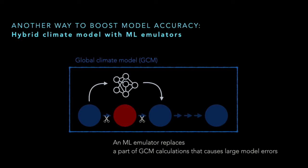So we need to take a different approach. An alternative which is computationally feasible is a hybrid climate model with machine learning emulators. In a hybrid model, a machine learning emulator replaces a specific part of the GCM — global climate model — calculations from which we know large errors originated. Then the question becomes: what process, what calculation are we going to replace?